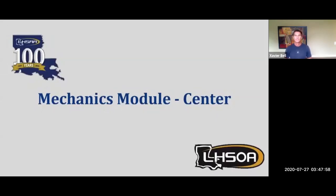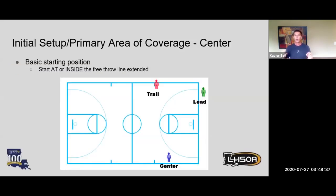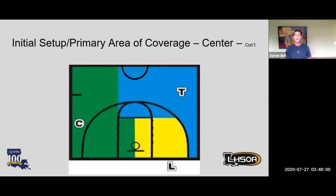Hey everybody, Darren McClure here from Baton Rouge. Here's our basic starting position — I call these our home spots for center. Center basically needs to straddle the free throw line. We can move a little bit but we don't want to go too far outside the bottom semicircle or too far to the top of the semicircle. In this image, our primary area of coverage is green — it's the closest lane line up to half court and the middle of the paint all the way down to the baseline. There may be times where there is a coverage intersection and it's up to us as officials to decide whose area it is.